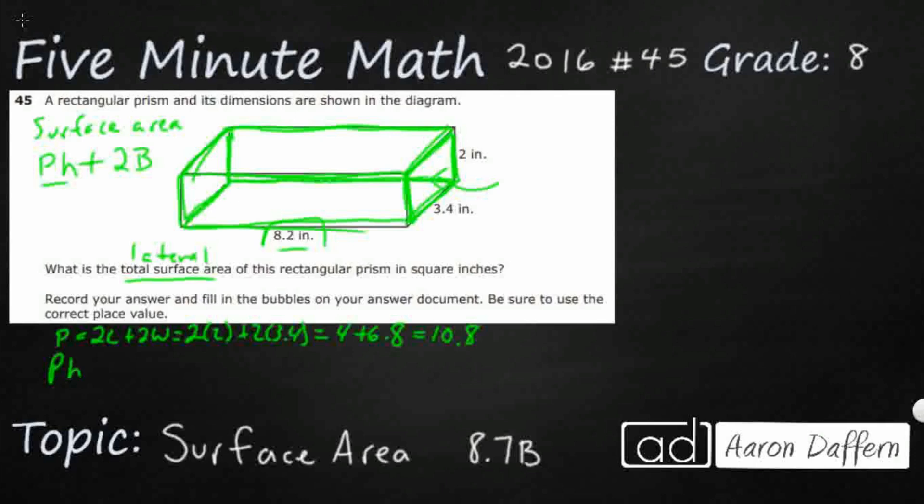P times height is going to equal 10.8 times 8.2. We could do that manually, but since we've got access to a calculator, let's just do that. 10.8 times 8.2.